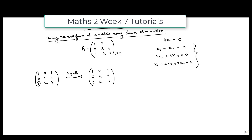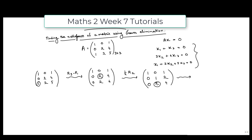Now let us make the leading element in the second row equal to 1. We do (1/2)R2, so the first row remains as it is, the second row becomes [0, 1, 2], and the third row remains as it is. We need to make the element in the third row, second column equal to 0. The element in the first row, second column is already 0, so we only need to handle the third row.